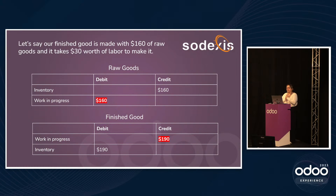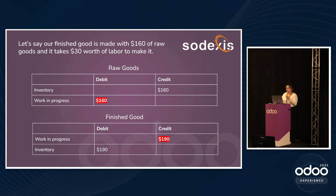Let's say that your finished good is made with $160 worth of raw goods and it takes $30 worth of labor to make it. When you complete that manufacturing order in base Odoo, your inventory account is going to be credited to represent the value of your raw goods being consumed, and then that value will move into the work in progress. When your finished good is posted, we're taking $190 out of the work in progress to incorporate that extra $30 of labor, and then we increase your inventory valuation by $190.